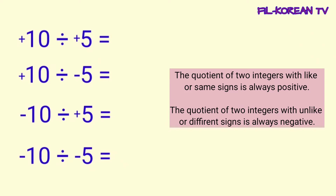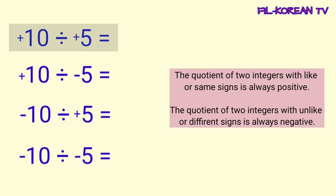Now, let's answer the first example: positive 10 divided by positive 5. Let's just divide the numbers — 10 divided by 5 equals 2.